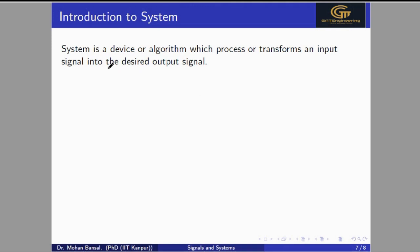Now we talk about systems. A system is a device or algorithm which processes or transforms an input signal to a desired output signal. For example, if there is echo and noise when I am speaking, I need to remove that noise. So we use a noise cancellation system — the input is the noisy signal and the output is the clean signal after cancelling the noise. This is a system used to process an input signal to get the desired output signal.